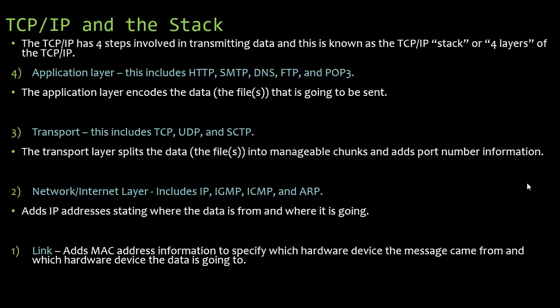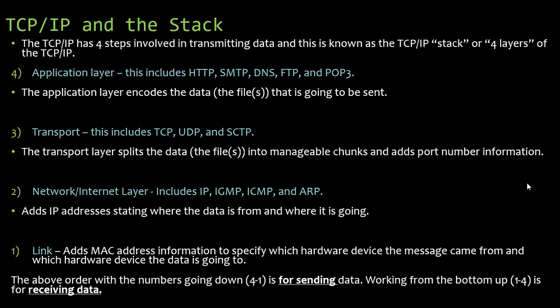Finally, the link layer adds the media access control address, also known as the MAC address information, to specify which hardware device the message came from and which hardware device the data is going to. The above order with numbers going down, four to one, is for sending data. Working from the bottom up is for receiving data.